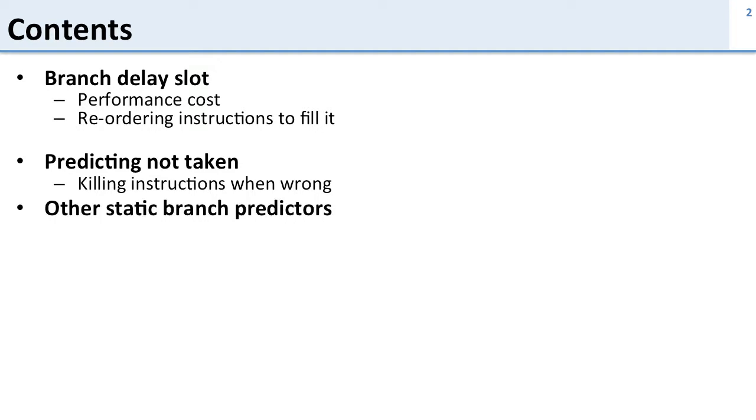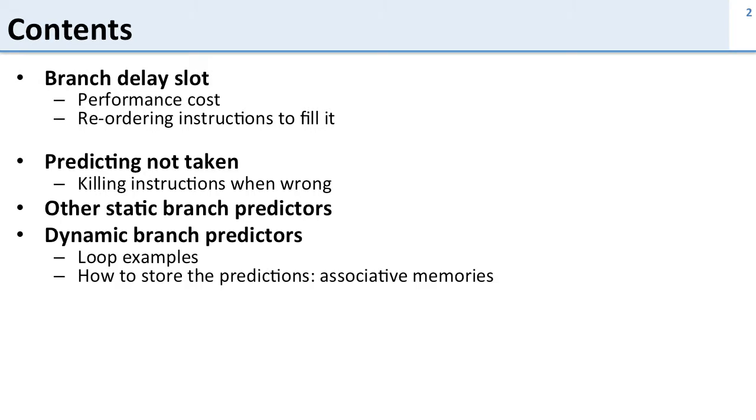Then we're going to look at some other static branch predictors - that is, branch predictors that don't change based on the behavior of the branch. We're going to see there are different ways to do this, but they don't work that well. So that's going to motivate us to look at dynamic branch predictors. We'll look at examples of loops and how they work, and talk about how the processor stores which branches are taken when.